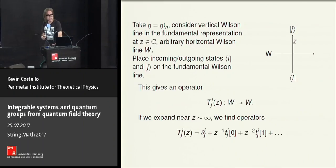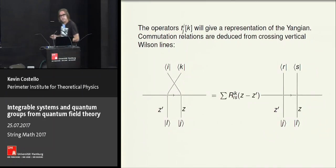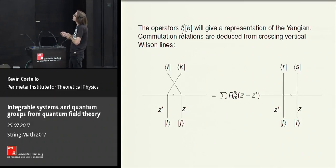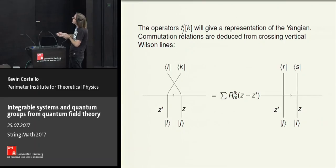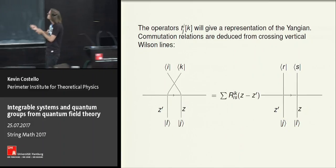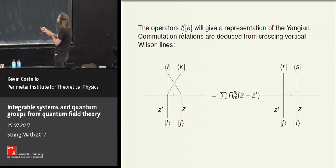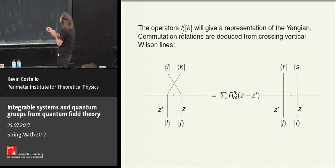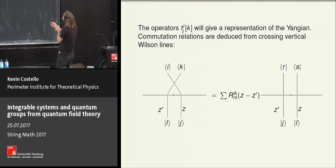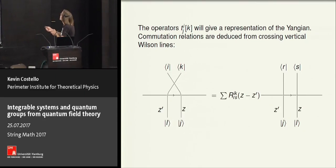How can we see the Yangian relations? The idea is to consider Wilson lines which cross — we make the vertical Wilson lines cross. If I have a crossing and consider the figure on the left, this affects the way I label the states at the top, because the crossing is given by the R-matrix. So I get an expression where there's no crossing but the labeling of states at the top is changed by a factor of the R-matrix. On the other hand, two vertical Wilson lines is just given by the product of operators on the horizontal Wilson lines, since I can take them to be separated.